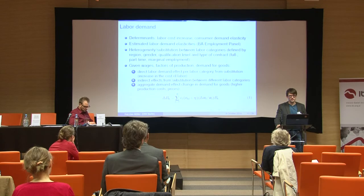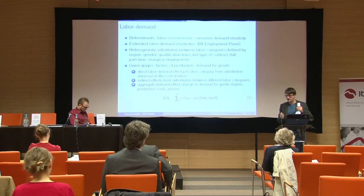In the demand model given wages, we have a direct demand effect — the relative price of labor changes compared to other factors of production. There's an indirect effect because relative prices of labor between different groups change. And obviously there will be some aggregate demand effect as labor costs increase and product prices react. We don't have empirical estimates on this, so we use a range of aggregate demand elasticities and show the range of results.